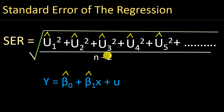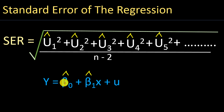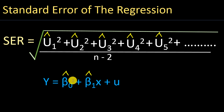The reason we deduct 2 from the number of observations is that when we use a sample regression line, we estimate the intercept and the slope — two coefficients. Since we are estimating these two values, we deduct 2 degrees of freedom. So the reason we have n minus 2 is because we are estimating 2 parameters. Then we take the square root of the whole thing.